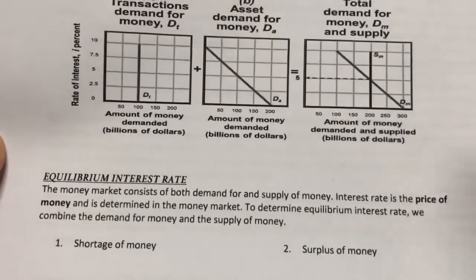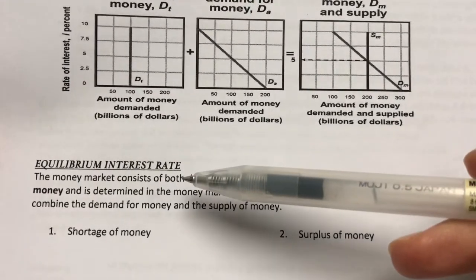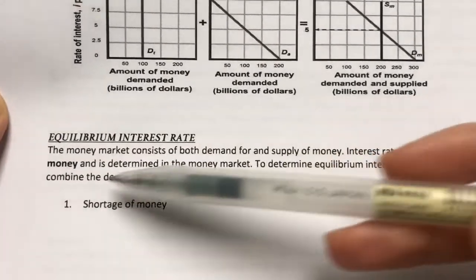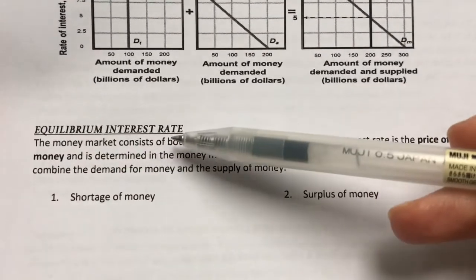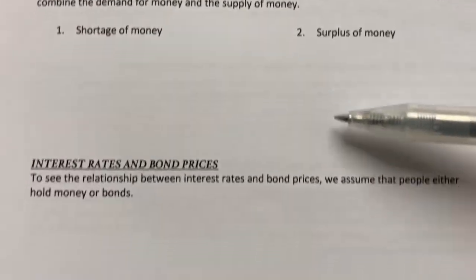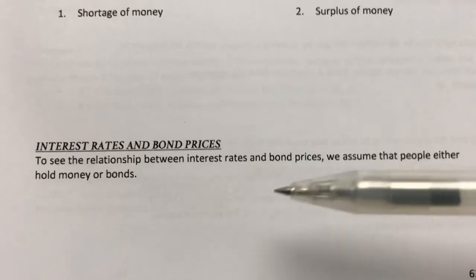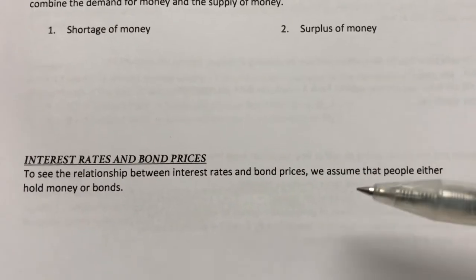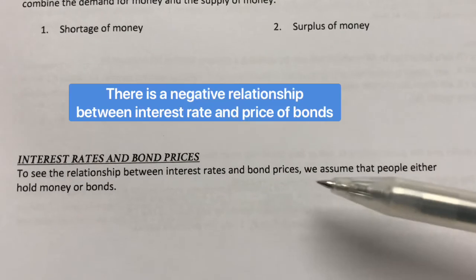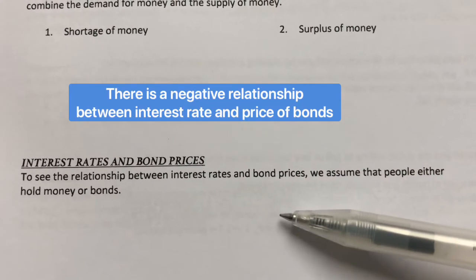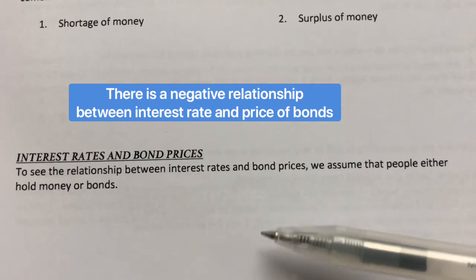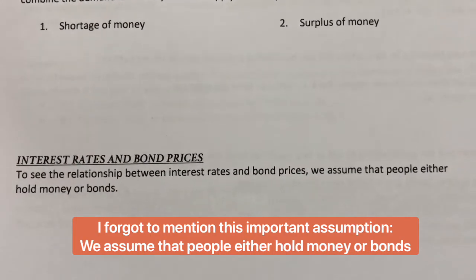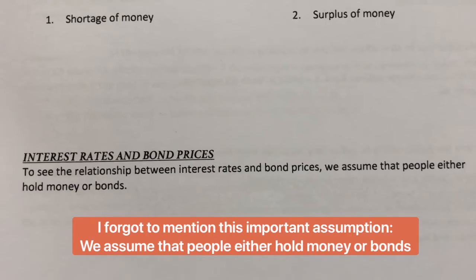Now that we know how to determine the equilibrium interest rate and what happens when there's a shortage or surplus of money, let's move on to the next subtopic: interest rates and bonds. There's actually a relationship between interest rates and bond prices — specifically, they have a negative relationship with each other. Let's go back to our previous example to explain this further.